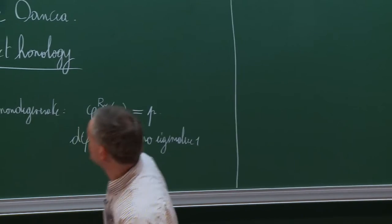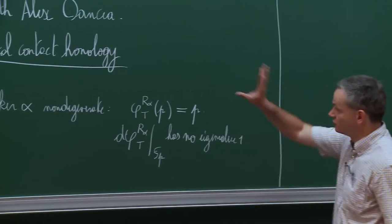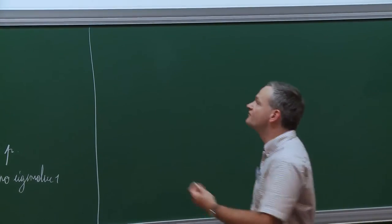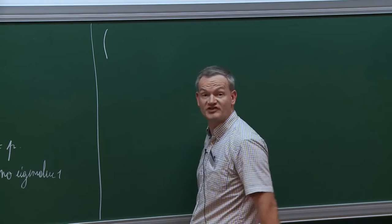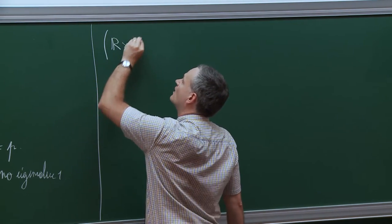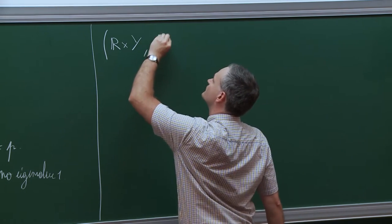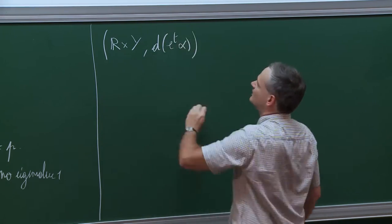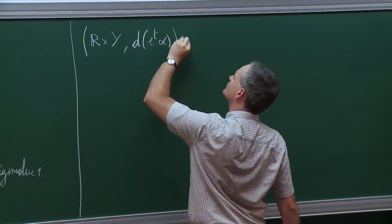That's one of the ingredients—the choice of non-degenerate contact forms—necessary to set up this theory. The second ingredient lives at the level of the symplectization of our contact manifold. This is just the product of Y with the real line, equipped with the symplectic form d(e^t α), where t is a coordinate along this real line.